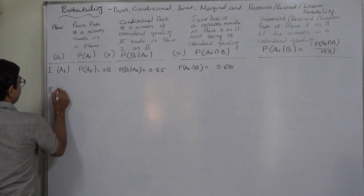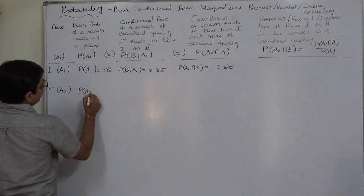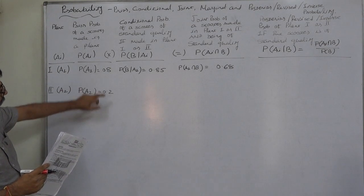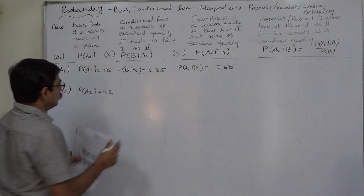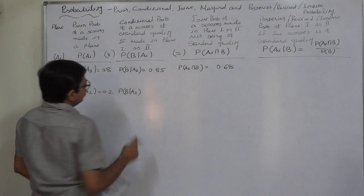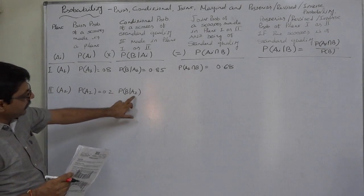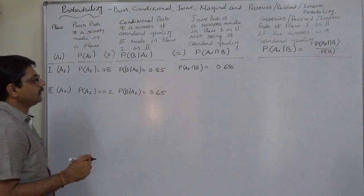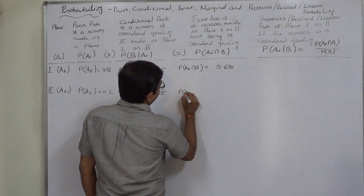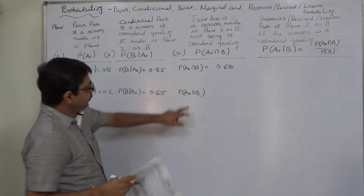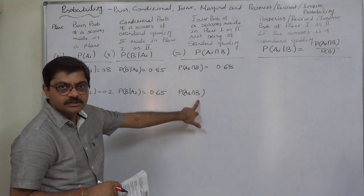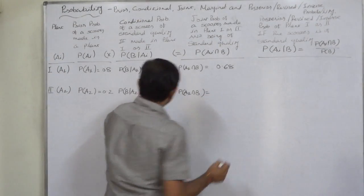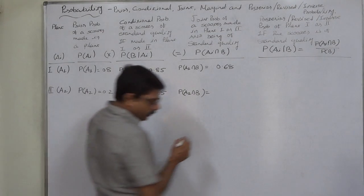Similarly, for plant two, let it be A2. P(A2) is 0.2 because 20% of scooters are manufactured at plant two. P(B|A2), the probability of a scooter being of standard quality if manufactured at plant two, is given as 65 out of 100, that is 0.65. Multiplying these two gives the joint probability P(A2 ∩ B). That is 0.2 × 0.65, which comes to 0.13.